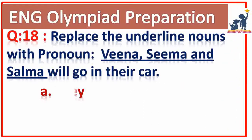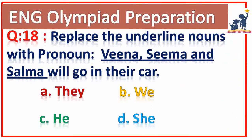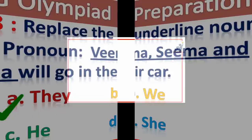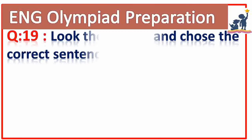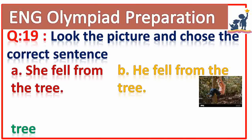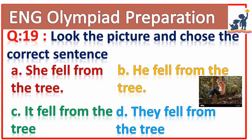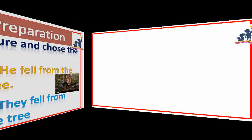Question number eighteen: replace the underlined nouns with a pronoun. Veena, Seema and Salma will go in their car. Option A. Yes, right. Question number nineteen: look at the picture and choose the correct sentence. Answer A — she fell from the tree. Right, very good.